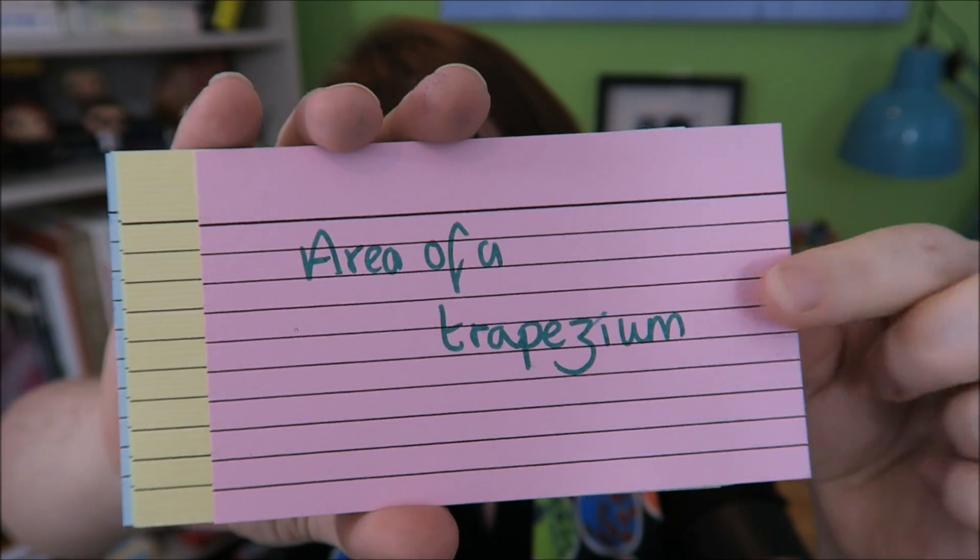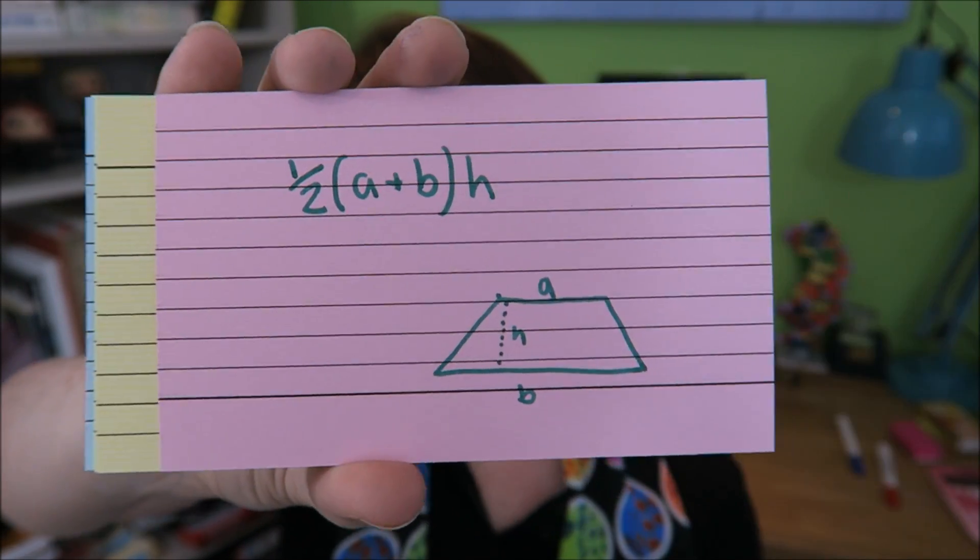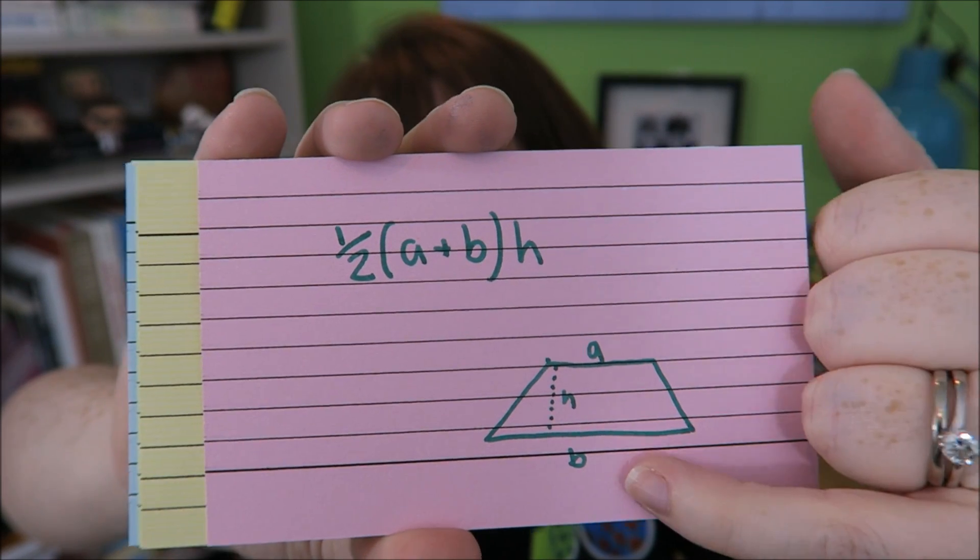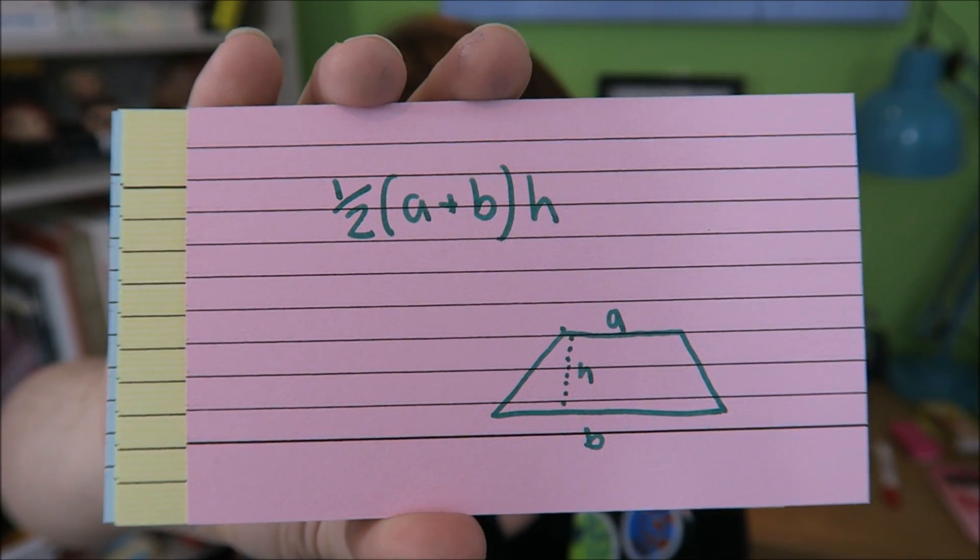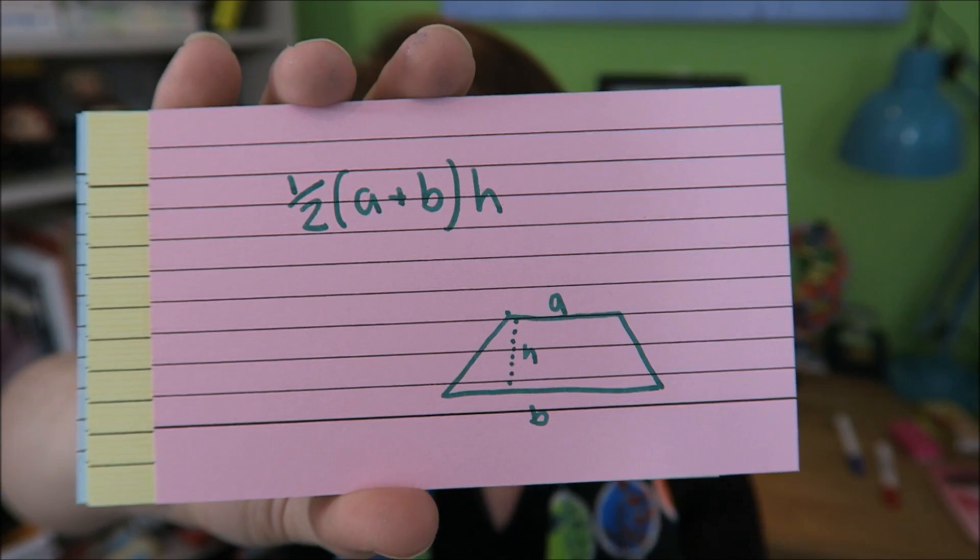Area of a trapezium. Trapezium is half A plus B, which are the two different length sides. Do that bit first, and then times it by the height.